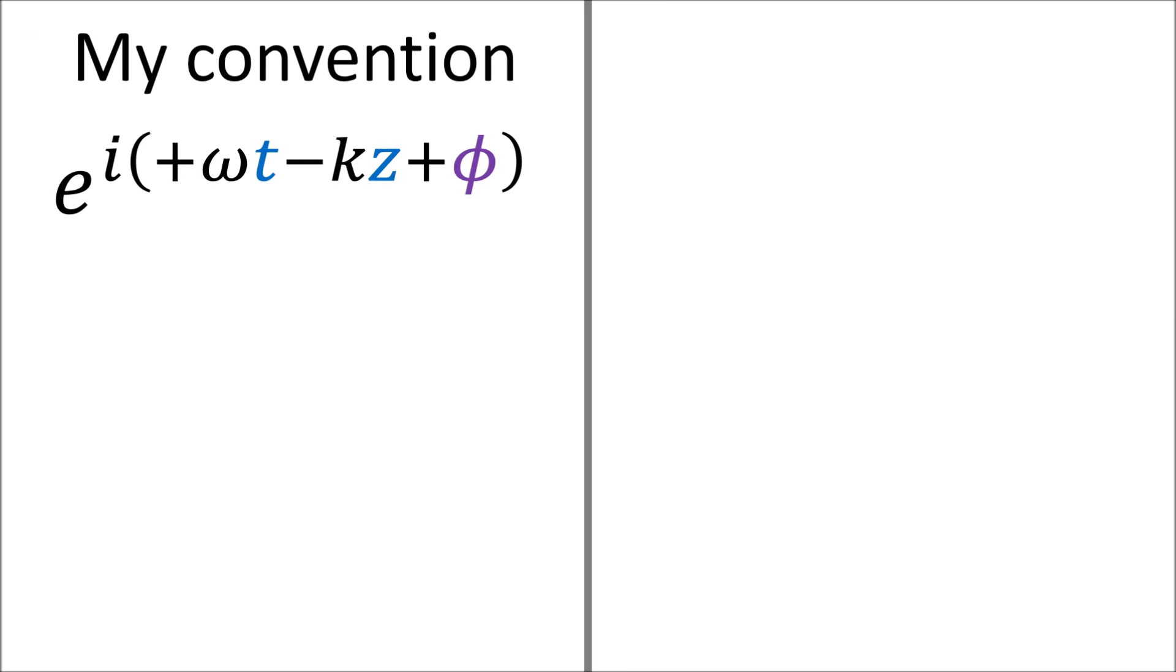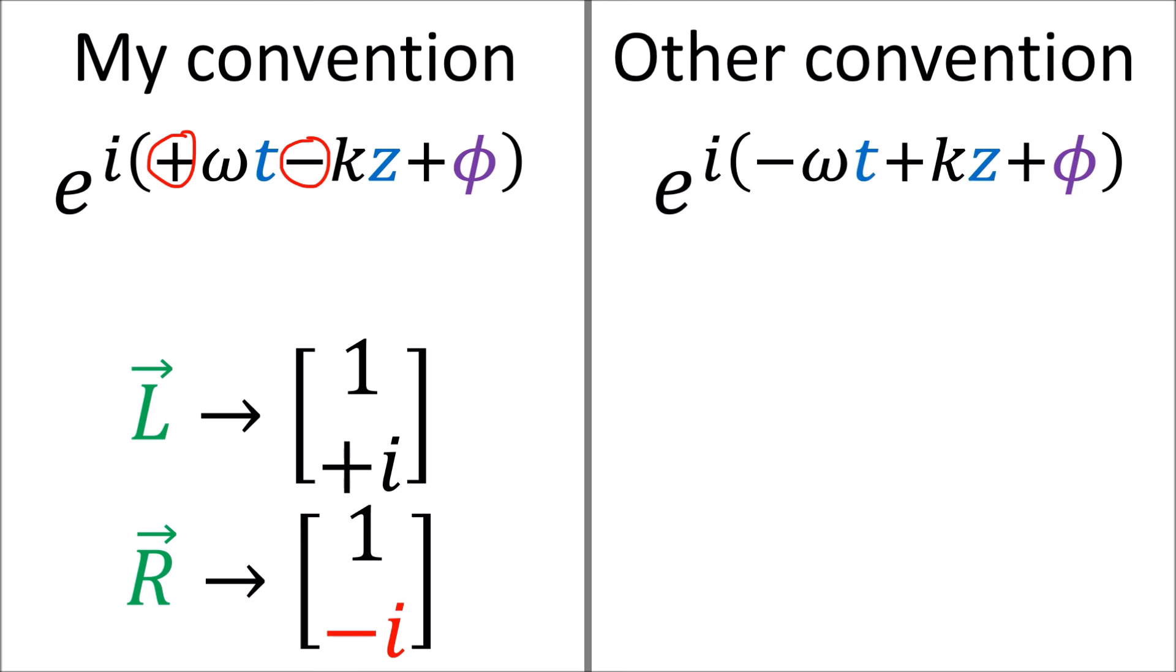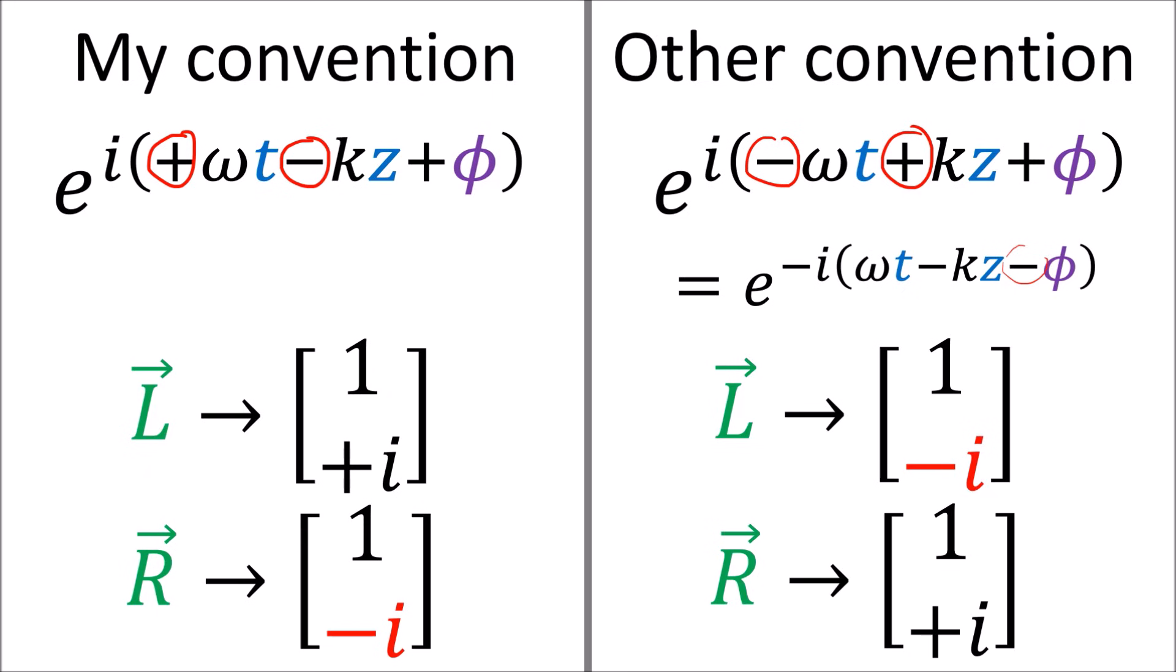Now you'll notice in this video, I've written my traveling waves with a positive time term and a negative z term. Some textbooks use the opposite sign convention, with a positive z term and a negative time term. And as a result, the Jones vectors for circularly polarized waves have opposite signs on the imaginary parts. So make sure you know which sign convention you're using when talking about circularly polarized waves.